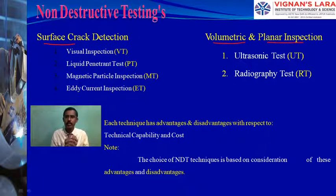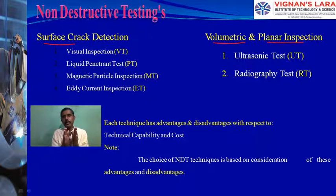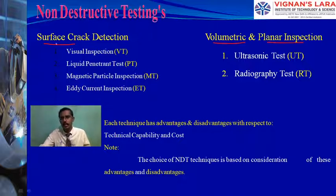The crack or defect may be on the surface or may be in the subsurface — subsurface means into the thickness of the specimen. For surface cracks, I have divided into four categories: number one, visual inspection; number two, liquid penetrant test; number three, magnetic particle testing; and number four, eddy current testing.